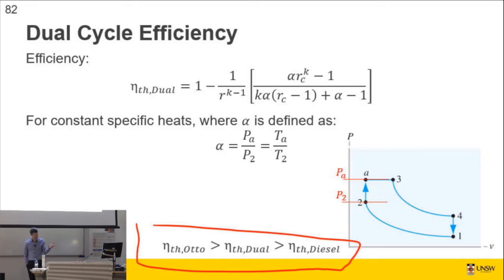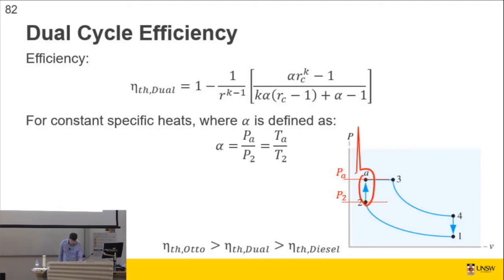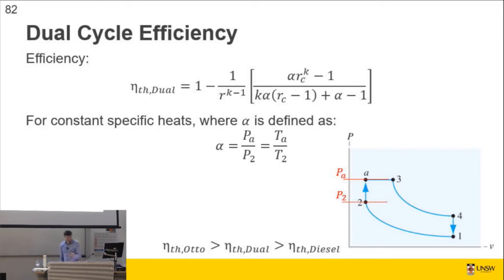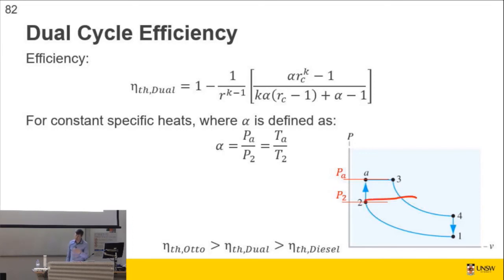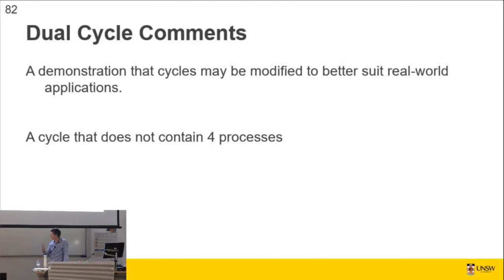Question: high values of alpha or low values of alpha — adding most of the heat isochorically or adding most of the heat isobarically — which will give you higher efficiency? If all of the heat was added on the vertical, it would be most like the Otto cycle, which has a higher thermal efficiency. If all of the heat was added across the horizontal, it would be most like the Diesel cycle, which has a lower thermal efficiency for the same compression ratio. So a higher value of alpha will give you a higher thermal efficiency, which would prove to be true if you graph it.